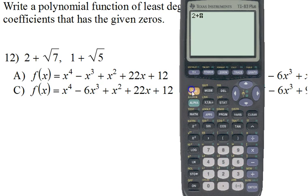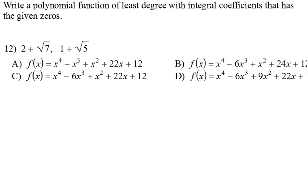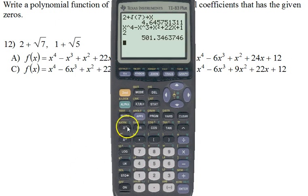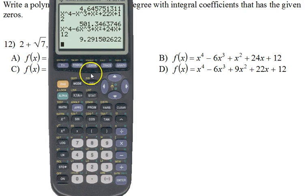Just type in that entire expression, 2 plus the square root of 7, store it as x. Type in your answer choices, x to the fourth minus x cubed plus x squared plus 22x plus 12. It doesn't give us zero. Let's try another one, let's try B. 6 right there, x squared plus 24x plus 12. That one doesn't give me zero.